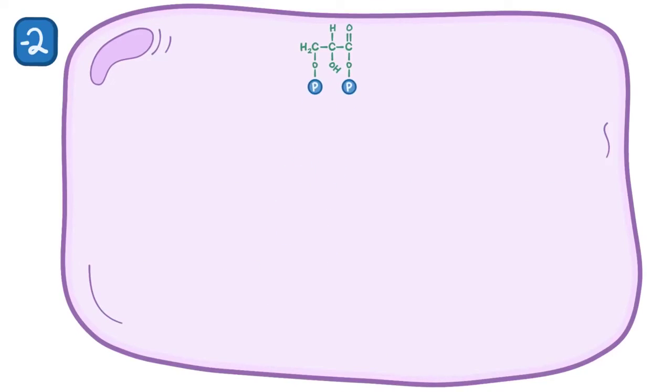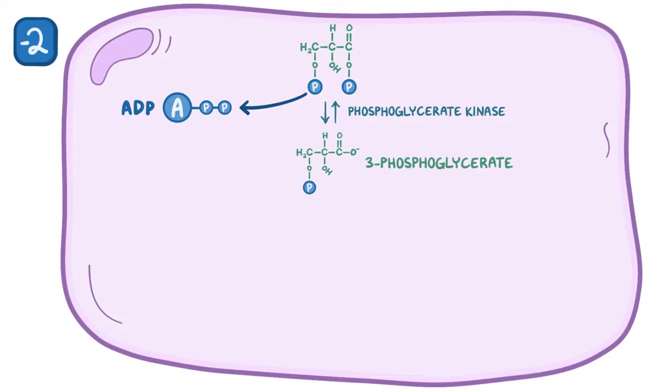Now, an enzyme called phosphoglycerate kinase removes a phosphate from the first carbon of 1,3-BPG and gives it to ADP, making 3-phosphoglycerate and ATP as a byproduct. So we'll add two more ATPs to our counter because this reaction happens twice, so now we're back at zero.